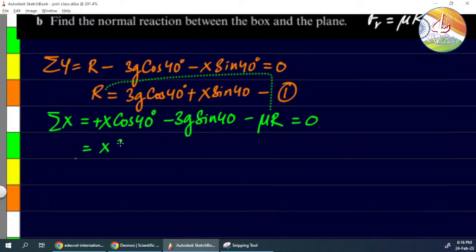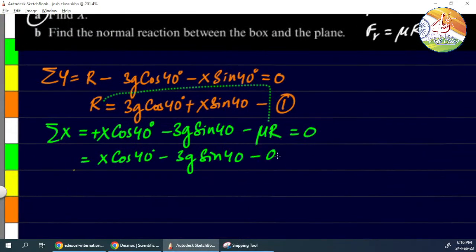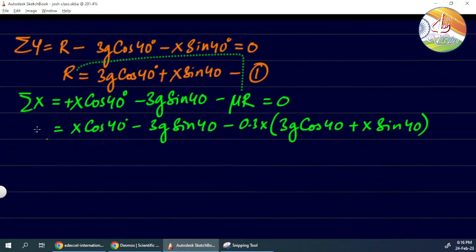X is unknown. X cos 40 minus 3g sin 40 minus mu, value is given 0.3, into in place of R substitute this whole equation: 3g cos 40 plus X sin 40. The equation is a little large. Total should be zero, but keep X values on one side and send the other terms to the other side.